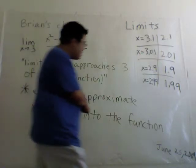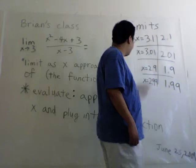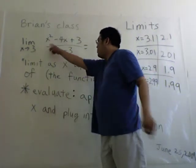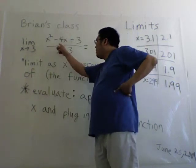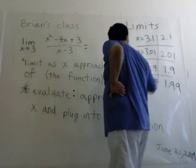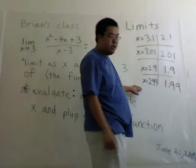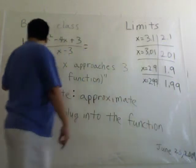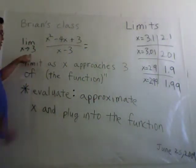I have an example over here, and what I've got here is x equals 3.1, and I've got this number 2.1 here. So what I did was I plugged in 3.1 for x and I got 2.1 out. So 3.1 squared minus 4 times 3.1 plus 3 divided by 3.1 minus 3 is 2.1. So I did that with a bunch of values that were close to 3, and that's because x approaches 3.